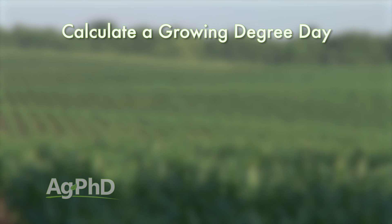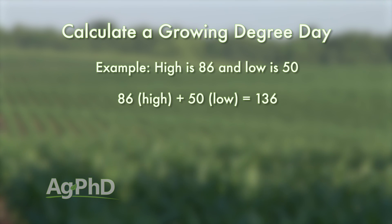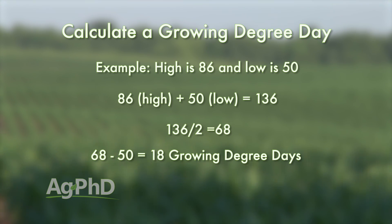For example, let's say the high temperature is 86 and the low temperature is 50 for a day. We'd add 86 plus 50 to get 136, then divide by 2 to get 68. Then you take 68 minus 50 and you would have 18 growing degree days for that particular day.